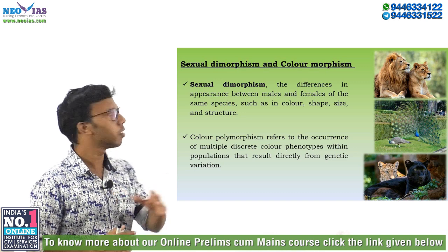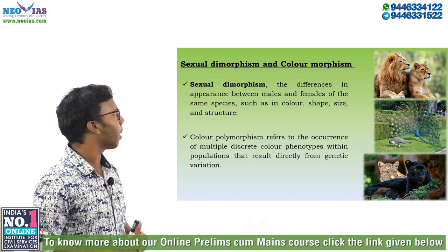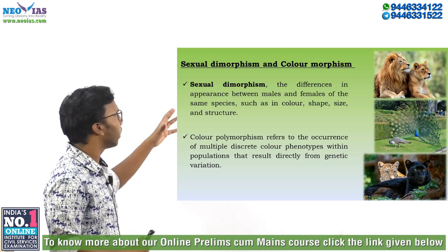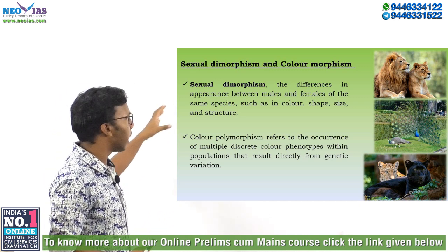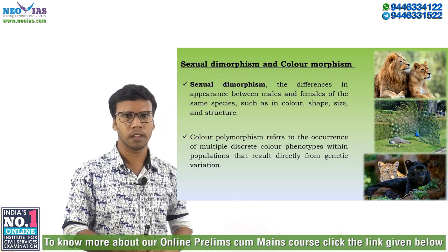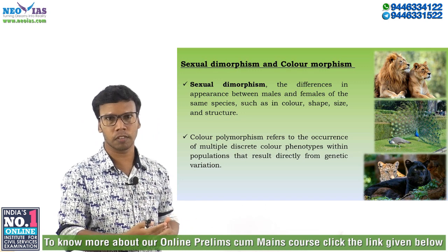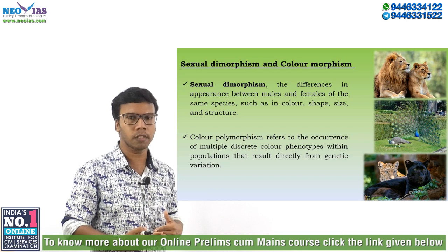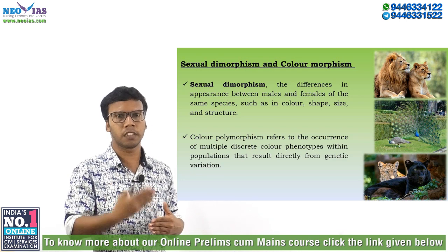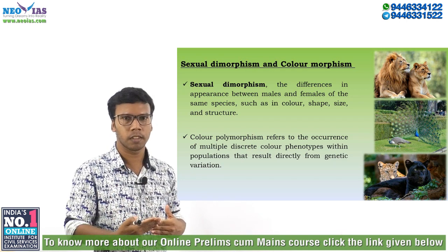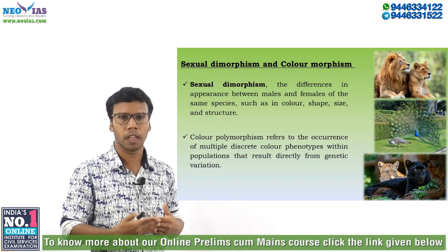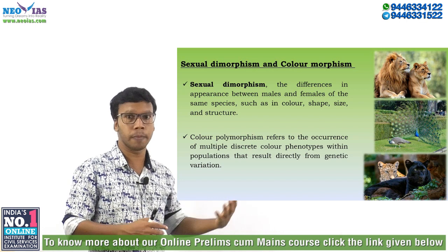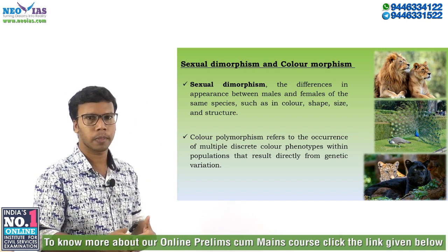Today we have two topics: sexual dimorphism and color morphism. Sexual dimorphism means the difference in appearance between males and females of the same species, other than their sexual organs. That difference is based on their size, color, shape, or structure of the body.